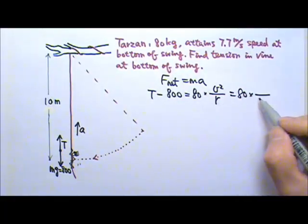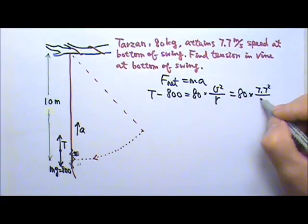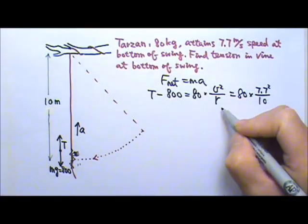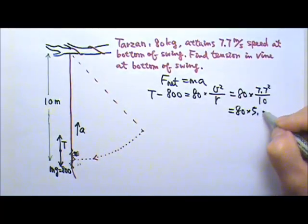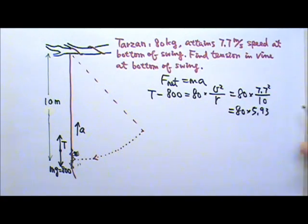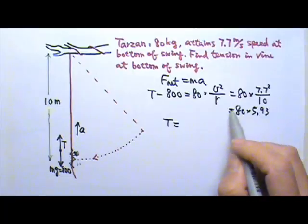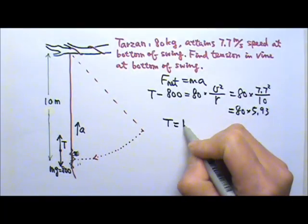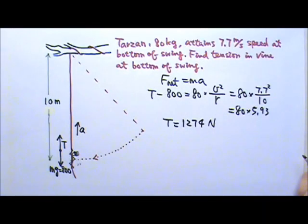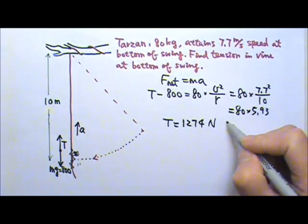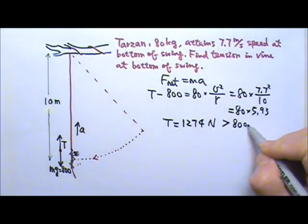So this is 80 times 7.7 squared divided by 10 which is 80 times 5.93 and this will give you the tension T minus 800 equals to that. This gives us 1274 newtons. Notice how this tension is much bigger than his real weight 800 newtons.